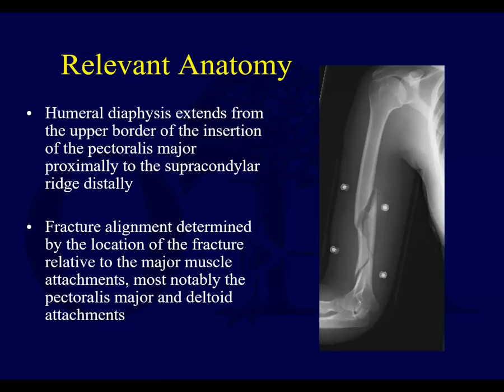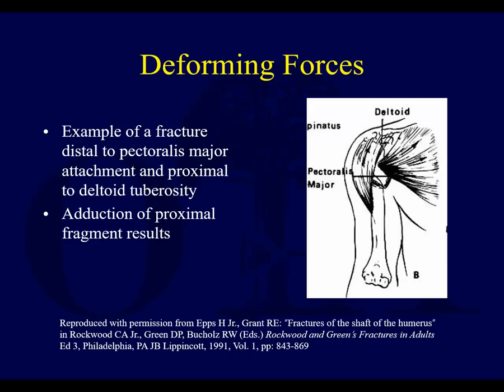So anatomy. The humeral diaphysis extends from the upper border of the insertion of the pec major approximately to the supracondylar ridge distally, and fracture alignment is determined by the location of the fracture relative to the major muscle attachment. You have the pectoralis major and deltoid attachments approximately that cause deformity as shown here. A fracture distal to the pec major attachment but proximal to the deltoid tuberosity — that's shown right here.